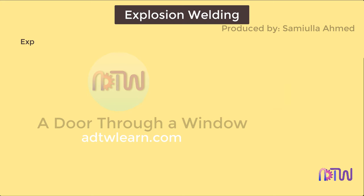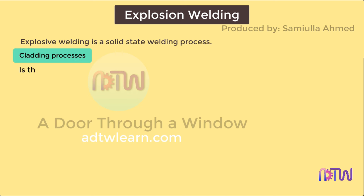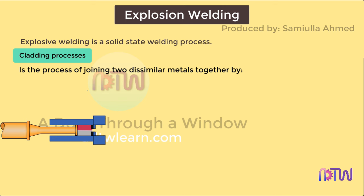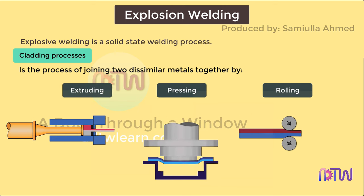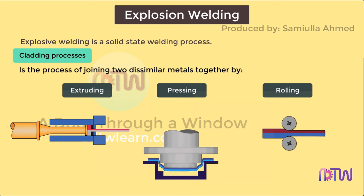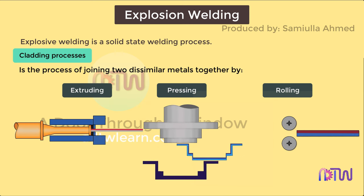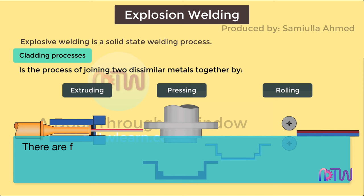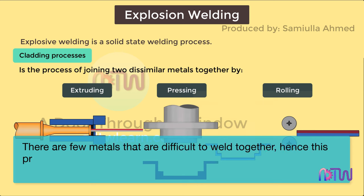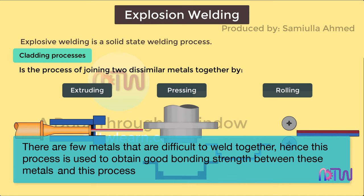Explosion welding is a solid state welding process largely used for cladding. Cladding is the process of joining two dissimilar metals together by extruding and pressing or rolling them under high pressure. It is one of the important methods for joining metals by the application of detonation of chemical explosives. Few metals are difficult to weld together, hence this process obtains good bonding strength between these metals, and it does not require a filler metal.